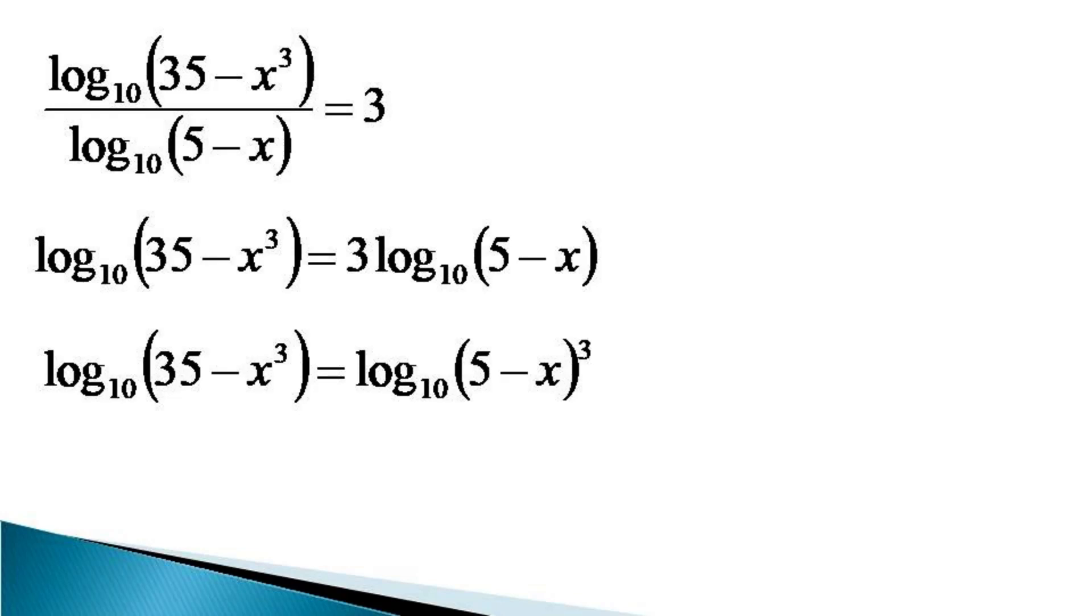Since on both sides of the equal sign the logs are having same base, their arguments also must be equal, which gives us a condition that 35 minus x cube is equal to 5 minus x whole cube.